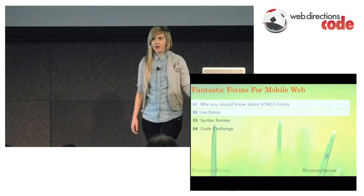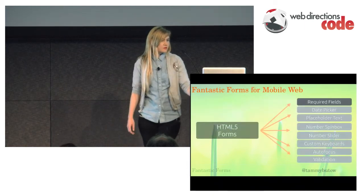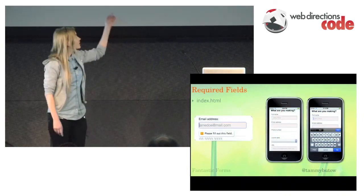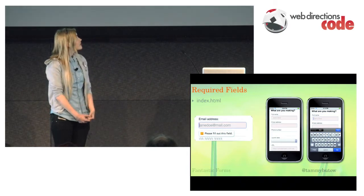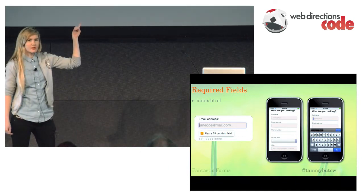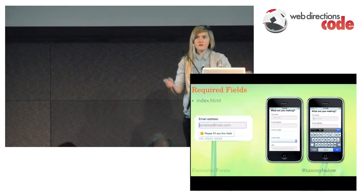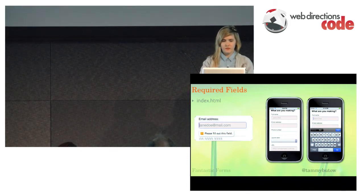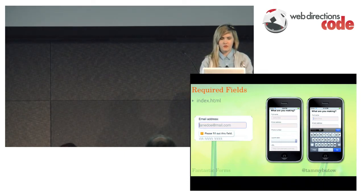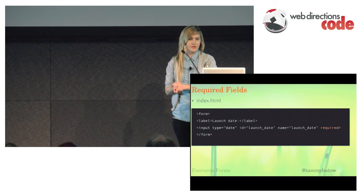So now we've looked at why you should know about forms and done a live demo. Now let's look into the syntax. First one is required fields. You can see the required fields I wanted. You don't get notification on PhoneGap, but you do get validation on the web version. It's automatic — it'll just say please fill out these fields. I didn't have to add anything else except for just the word 'required'. That's all you need to add for that to work.